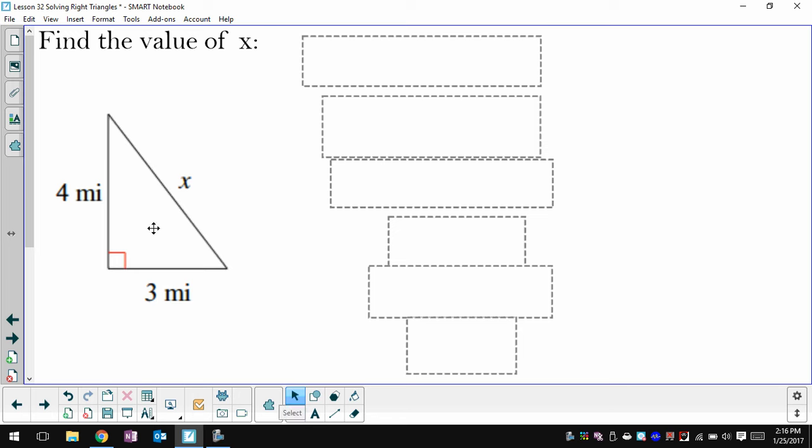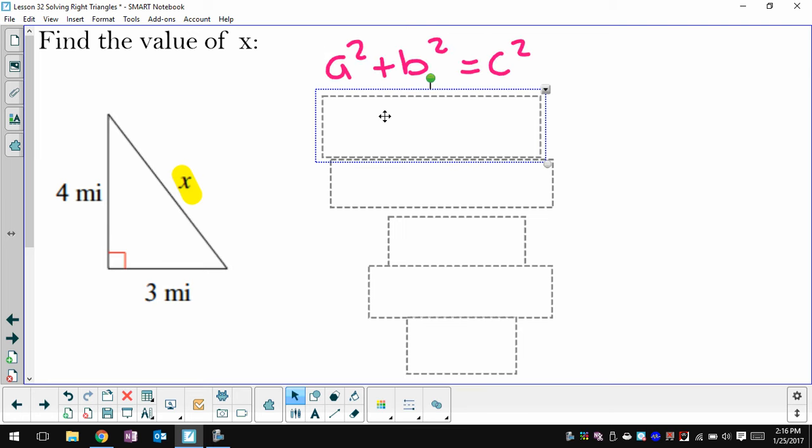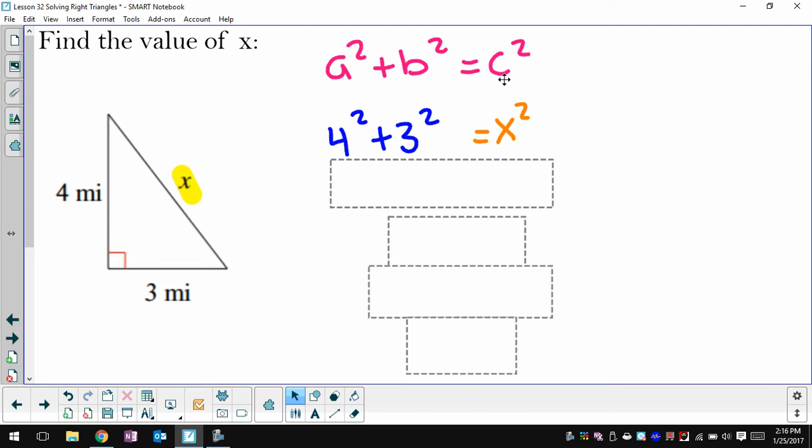So let's do another one. Again, I have two sides where I know how long they are, and I'm looking to figure out how long the third side is. So I can use Pythagorean Theorem. x happens to represent my hypotenuse. So when I use my formula, x is going to be c. So I'll plug 4 and 3 in for a and b. It doesn't matter which is which.